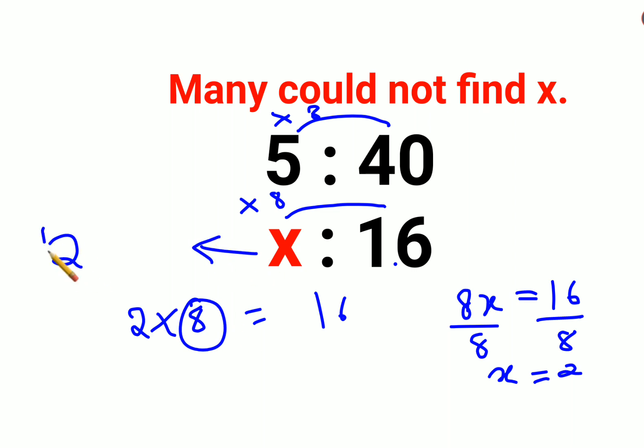So the value of x is just 2. See, a lot of people tell you that we can do it this way as well: 5 upon 40 equals x upon 16. That is also okay. This becomes 1 upon 8, so we are now left with 1 upon 8, and then the 16 gets multiplied on this side.